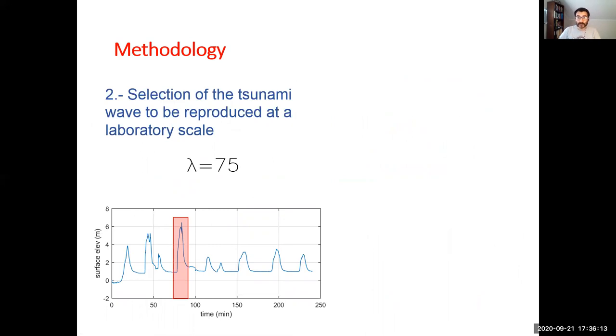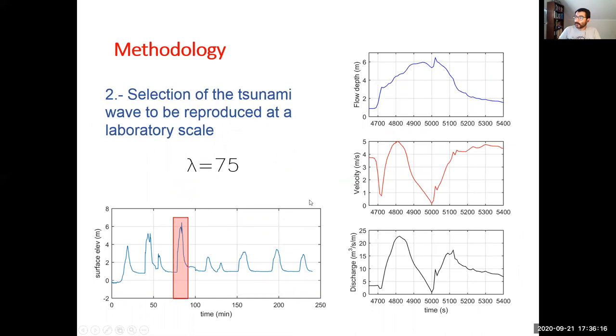We defined a scale of 1 to 75 to run the laboratory experiments, so we converted to seconds. We analyzed the wave, the flow depth in the location of the building, and the velocity. As we see, the maximum velocity does not coincide with the maximum inundation. When we have the maximum inundation we have almost zero velocity. In our experiment we will test only the inundation stage. In future work we wish to run experiments in the other direction as well.